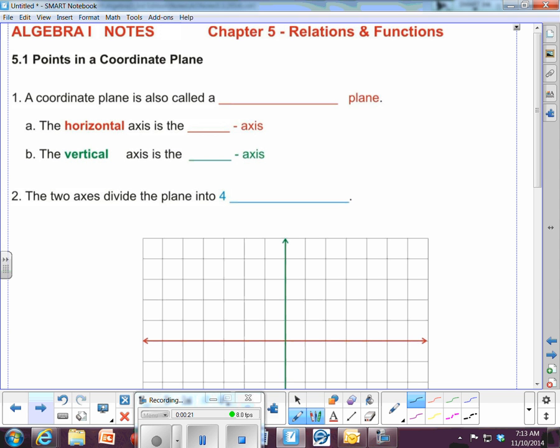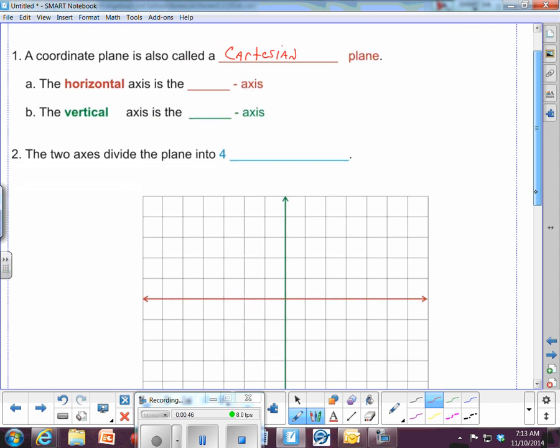Alright, 5.1, so number 1, a coordinate plane is also called a Cartesian plane. Cartesian, C-A-R-T-E-S-I-A-N. You'll hear me refer to it as a Cartesian plane often. Sometimes I'll call it a rectangular coordinate plane, but Cartesian plane is often the designation for a coordinate plane.